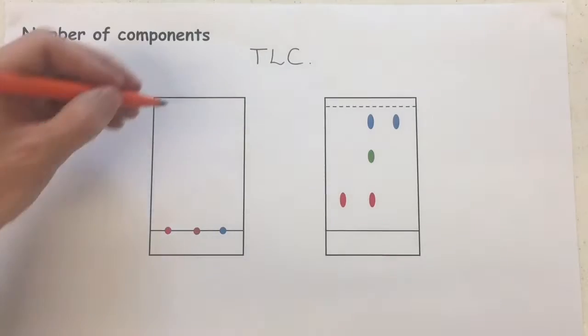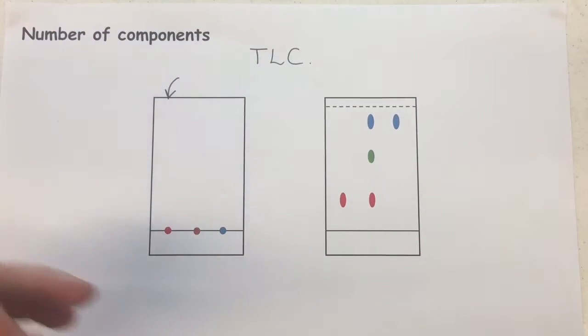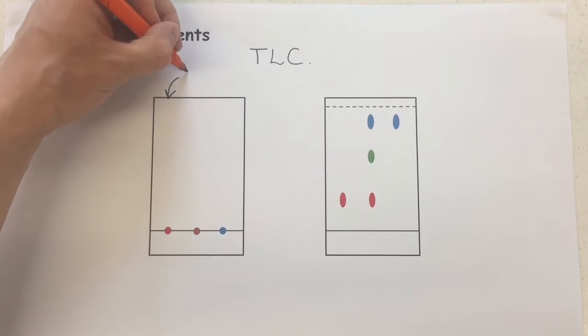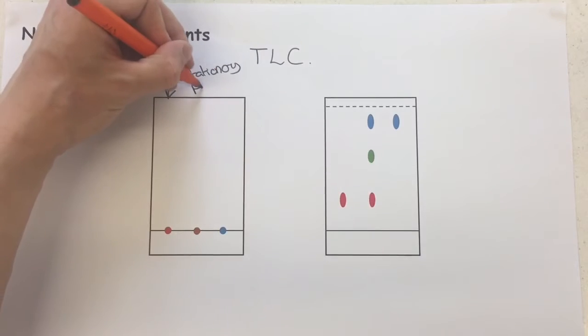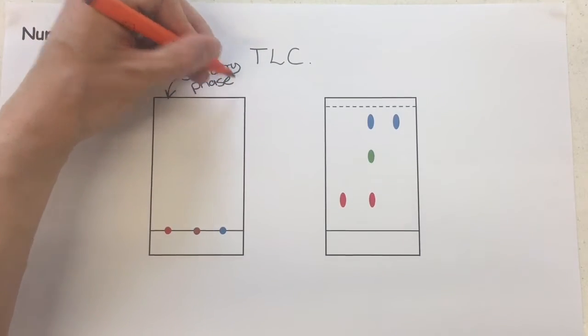Thin layer chromatography uses a TLC plate or paper chromatography, which is the stationary phase in our chromatography. This is either a TLC plate, which is a silica coated piece of glass or plastic, or it could be chromatography paper. The point is that it's very absorbent, so a solvent is going to be able to absorb right up it.